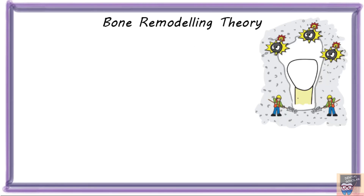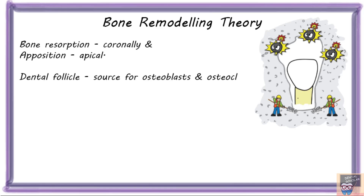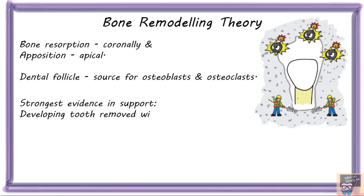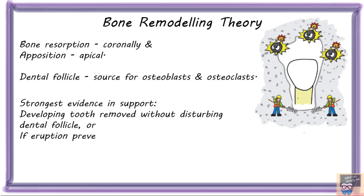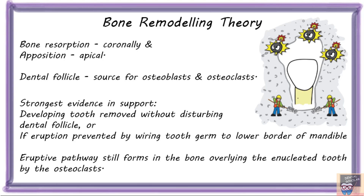Next is the bone remodeling theory. This theory is based on the fact that bone resorption occurs coronally and bone apposition apically. The dental follicle is the source for osteoblasts and osteoclasts. In experiments on dogs, when the tooth was removed without disturbing the dental follicle, or if eruption was prevented by wiring the tooth germ to the lower border of the mandible, an eruptive pathway still formed in the overlying bone by osteoclasts. However, if the dental follicle was removed, no eruptive pathway was formed.